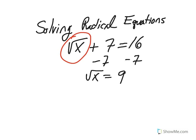Now, we need to remove the radical. To remove the radical, we're going to undo the square root. The opposite of square rooting is squaring. So we are going to square both sides of the equation.